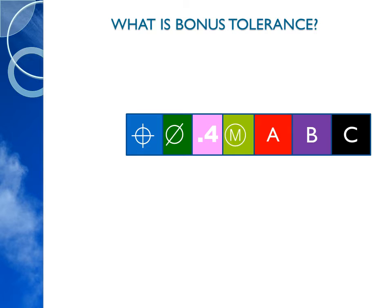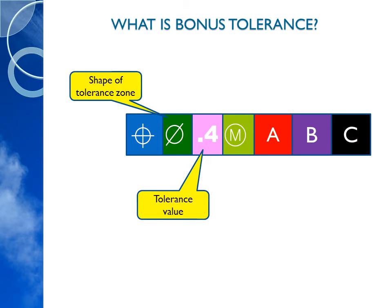So what is bonus tolerance? Bonus tolerance is the additional tolerance for geometric tolerance. Carefully examine this feature control frame where it is a 0.4 cylindrical tolerance zone with a maximum material modifier. Whenever a feature control frame has a modifier — either maximum material condition or least material condition — you will have a bonus tolerance.